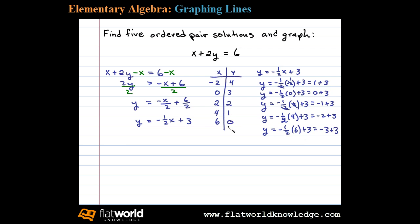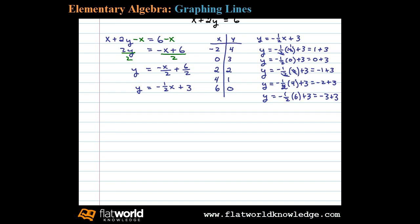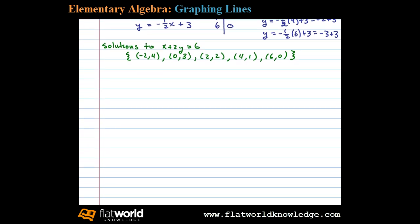So here's five ordered pairs to plot. Let's write them in set notation before we do that. Okay here we've listed the five ordered pair solutions that we found. Now let's draw in a blank coordinate plane and plot the points.